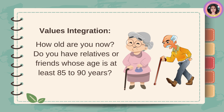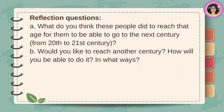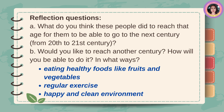How old are you now? You have relatives or friends whose age is at least 85 to 90 years. What do you think these people did to reach that age, going from the 20th to 21st century? Would you like to reach another century? How will you be able to do it? Eating healthy foods like fruits and vegetables, regular exercise, and a happy and clean environment.